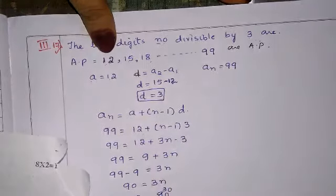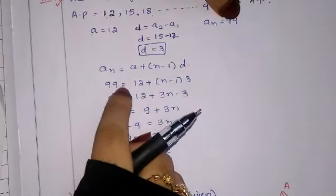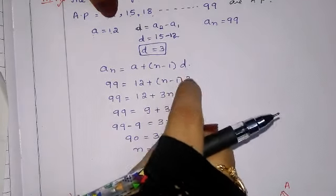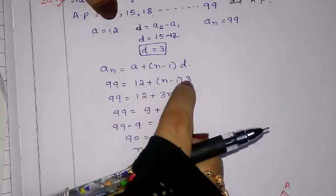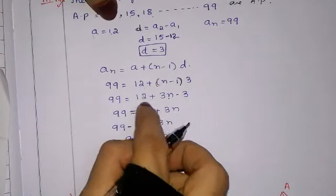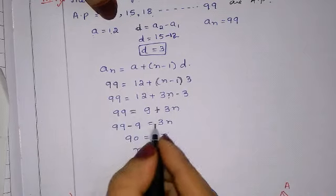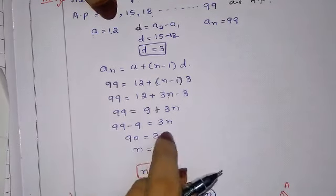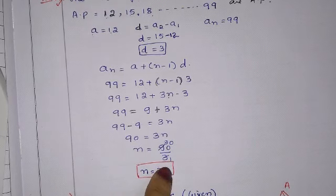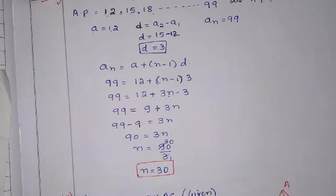Using the formula an = a + (n−1)d: 99 = 12 + (n−1)×3. So 99 = 12 + 3n − 3, giving 99 = 9 + 3n, then 3n = 90, so n = 30. Therefore there are 30 two-digit numbers divisible by 3.